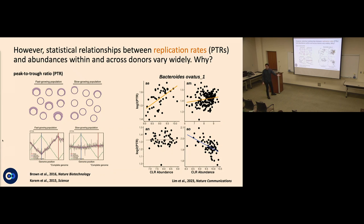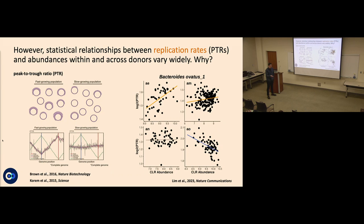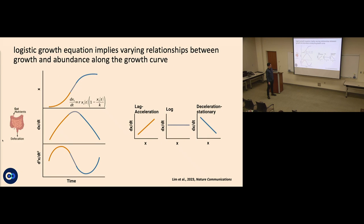The steepness of that pileup is related to growth rate, validated in vitro with many organisms. This PTR measure can be obtained for abundant organisms in the human gut. When we look at the relationship between PTR growth rate proxy and abundance in dense metagenomic time series from four different people, we get a variety of relationships — sometimes positive, sometimes negative, sometimes null. Something more sophisticated is going on.